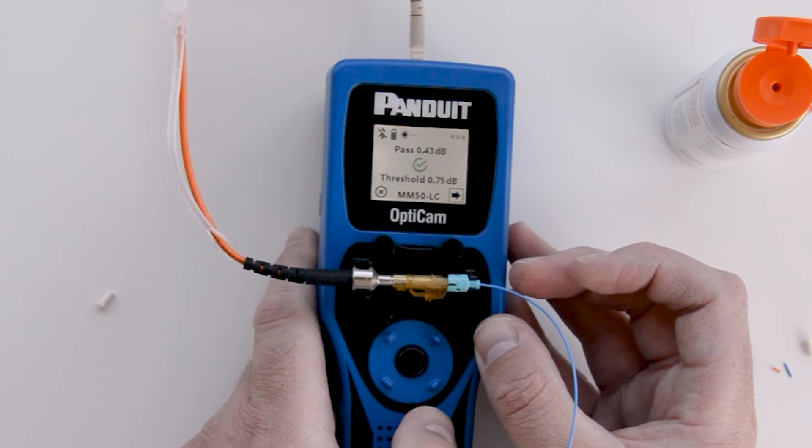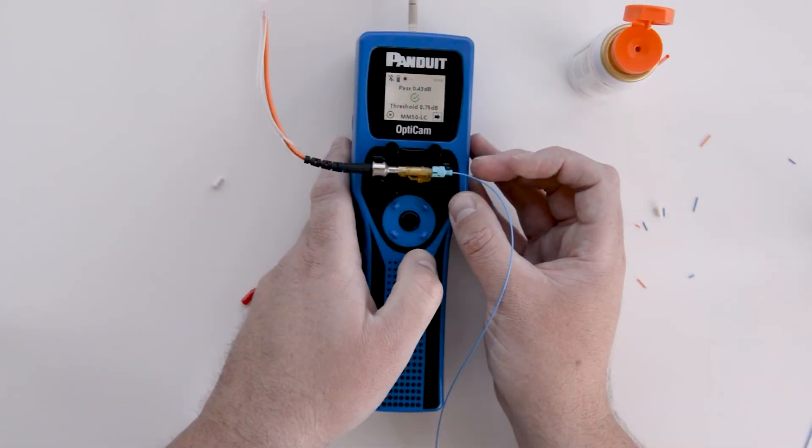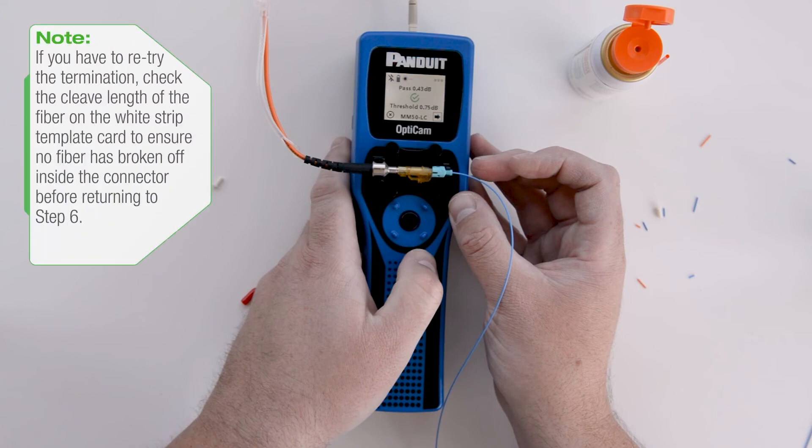The tool's default pass-fail value is 0.75 dB insertion loss, so this can be adjusted in the settings if the job or project requirements call for a specific value. If the connector fails, un-cam the connector and return to step 6 to prepare the fiber for cleaning and cleaving again.